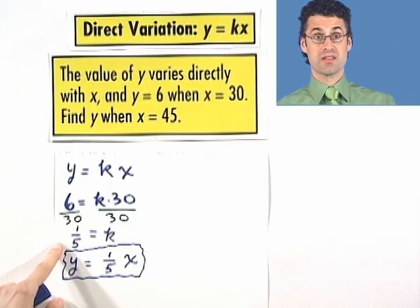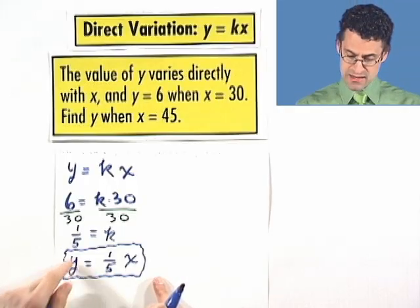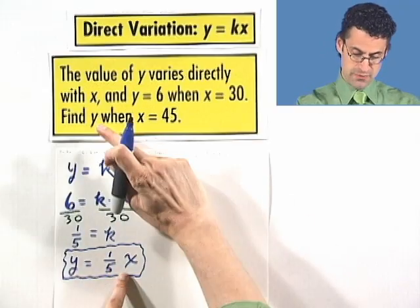You might think that's the end of the question and that we're done, but no, because remember, the question is to find y when x equals 45. So what do I have to do now? I've got to take this expression and let x equal 45 and find y.